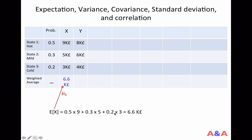If you use your calculator, you see that the expected value of X is 6.6,000 pounds.